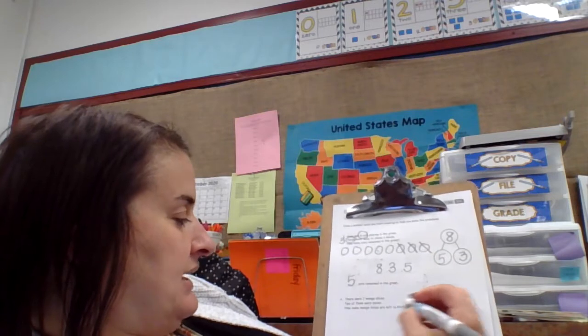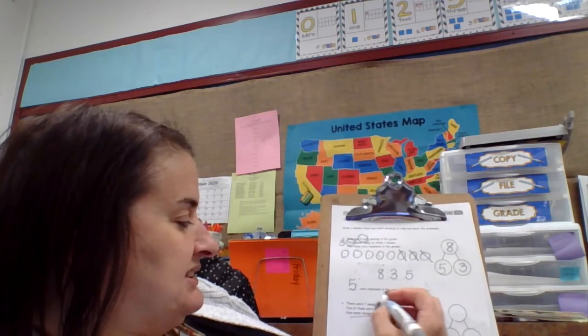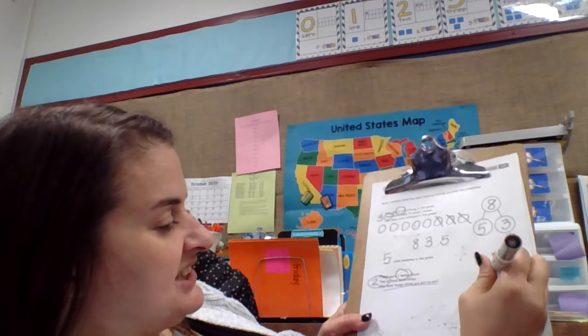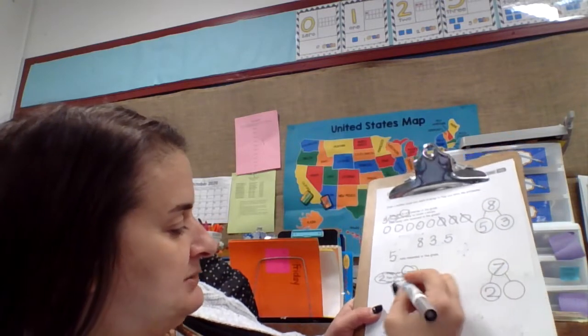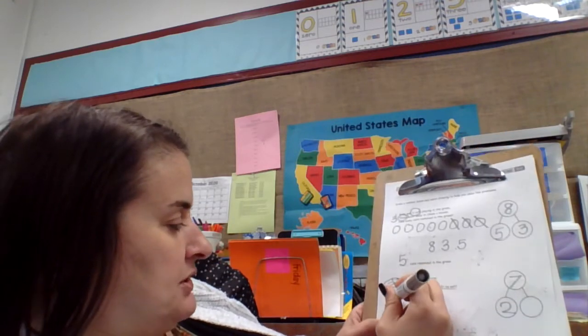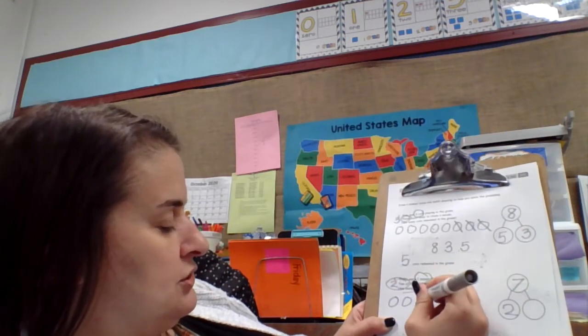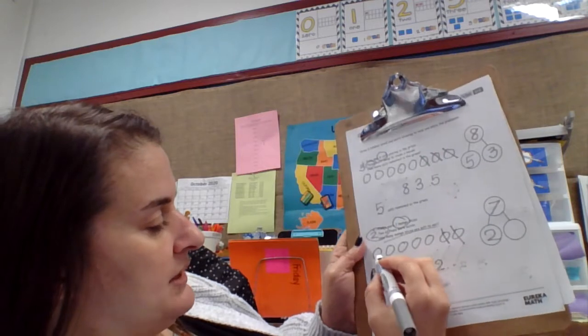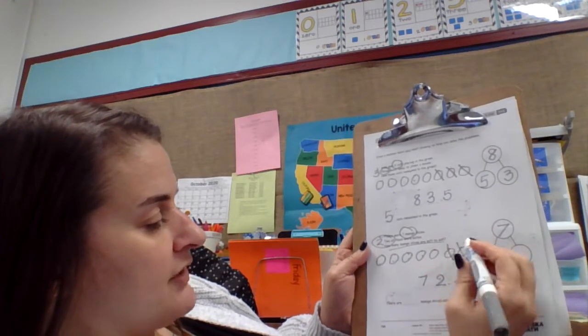There were seven mango slices. Two of them were eaten. How many mango slices are left to eat? Seven, two. Those are the numbers I've got to work with right now. So seven is the big number. Two is part. Seven take away two. We took them away. One, two, three, four, five, six, seven. How many do I take away? Yeah, two. Goodbye. One, two. How many are left? One, two, three, four, five.